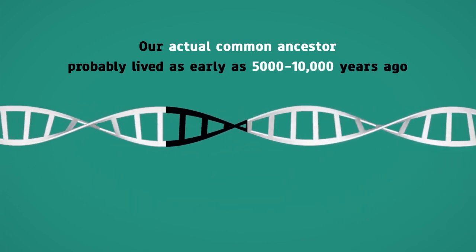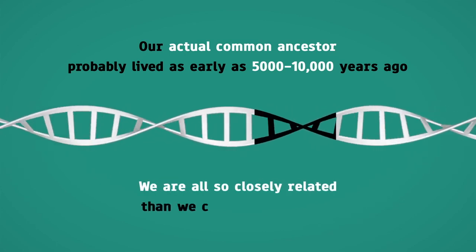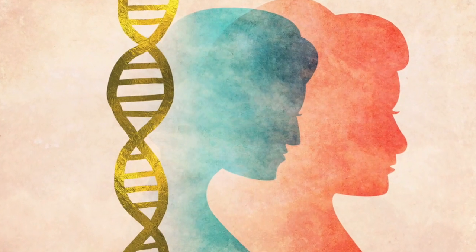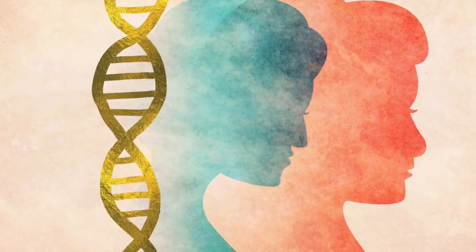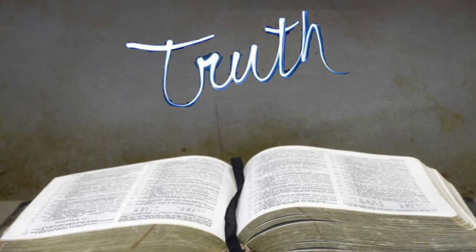All this shows that we are so closely related, more so than we could ever imagine. There is no disputing the fact that there is one single Y-chromosome ancestor and one mitochondrial DNA ancestor. This is exactly what the Bible has predicted.